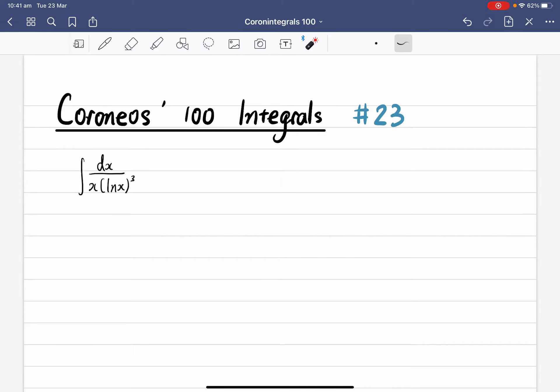Okay, Carani's 100th integral, number 23. So this time we've got a question: you need to integrate dx over x multiplied by the cube of lnx.